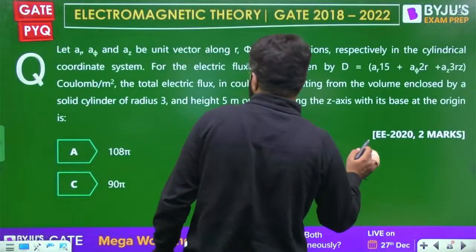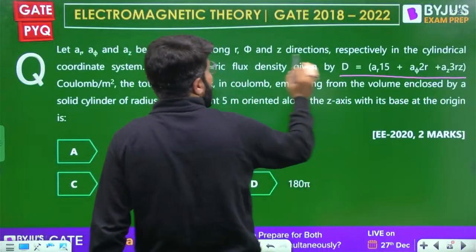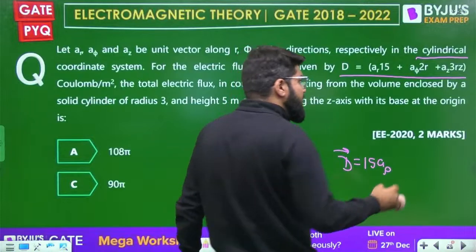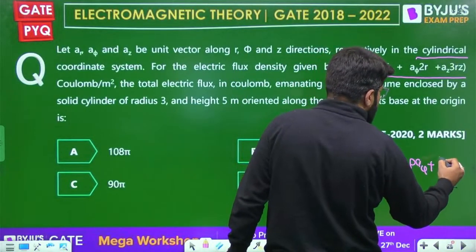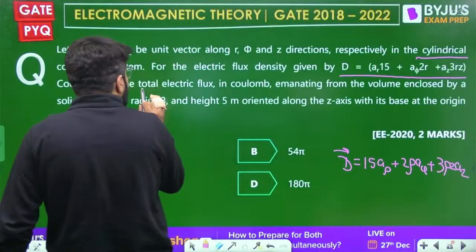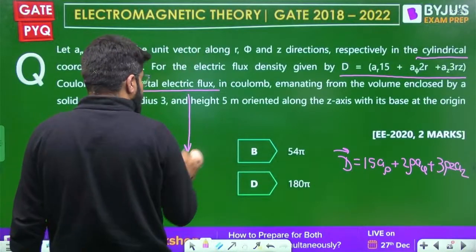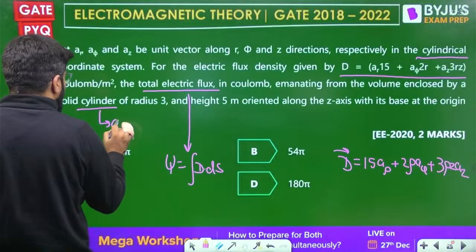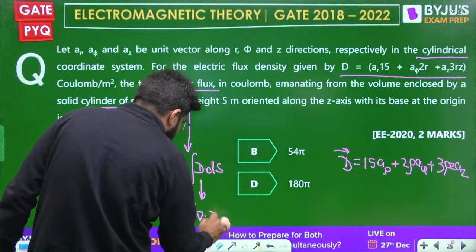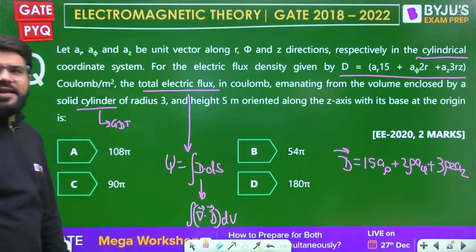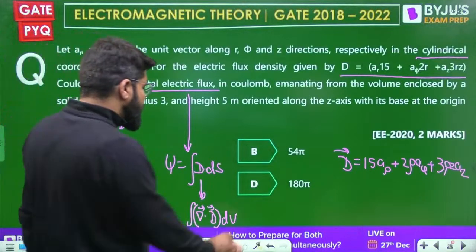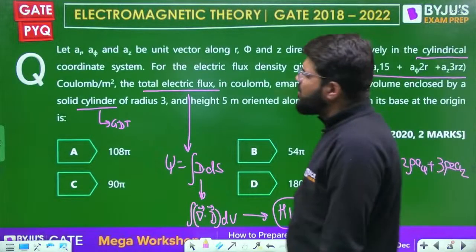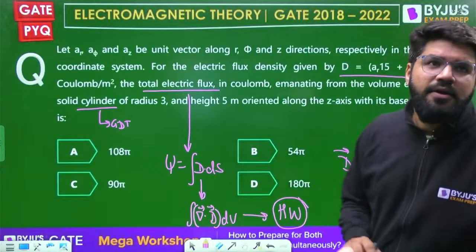Similar question for homework - EE 2020: D = 15aᵨ + 2ρaᵩ + 3ρz az in cylindrical coordinates. Find the total electric flux for a solid cylinder. The same approach applies: total flux = ∮D·dS = ∫∫∫∇·D dV by the Gauss divergence theorem. Since it follows the same pattern as the previous three or four questions solved, please complete this as homework.